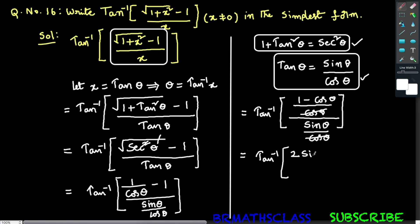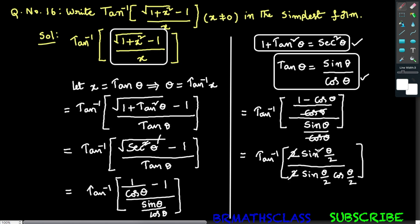From trigonometry, the formula for 1 minus cos theta is 2 sin squared (theta by 2), divided by — in the denominator, sin theta is there. The formula for sin theta is 2 sin(theta by 2) into cos(theta by 2). Now in the numerator the 2 and denominator 2 cancel, and one sin(theta by 2) in the numerator and one sin(theta by 2) in the denominator cancel. That equals tan inverse of sin(theta by 2) divided by cos(theta by 2), which is tan(theta by 2).